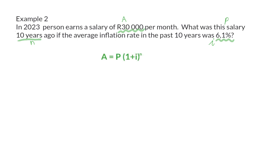We know that inflation is calculated with the compound interest formula. We know the A-value is R30,000. We want the P-value. The interest rate is 6.1, which we divide by 100 again. This was for 10 years.